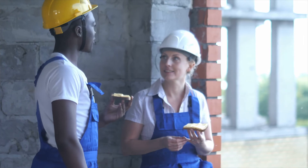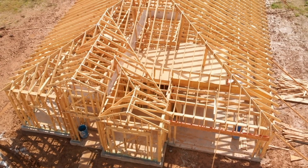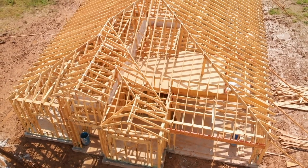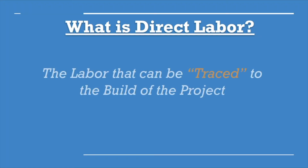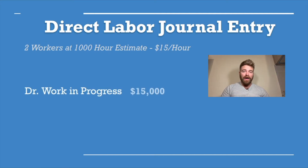To help build the guest house, you hire two workers. They are considered direct labor since they are directly building the home. Direct labor is the labor that can be traced to the build of the project. With your two workers, we estimate 1,000 hours and pay each worker $15 per hour. So we debit work in progress for $15,000 and credit wages payable for $15,000.